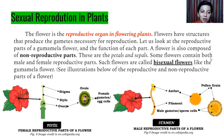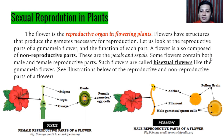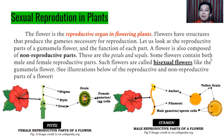A flower is also composed of non-reproductive parts — we can call them accessories. These are the petals and sepals. Some flowers contain both male and female reproductive parts. Such flowers are called bisexual flowers, meaning they have both the female part and the male part — a complete reproductive organ.